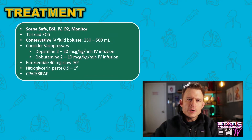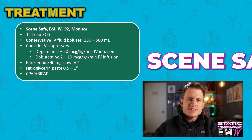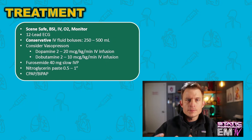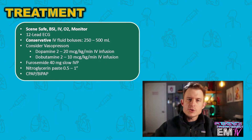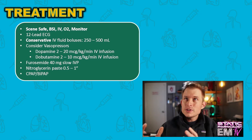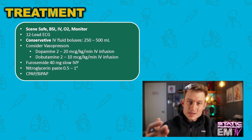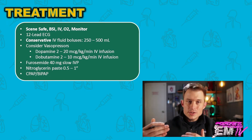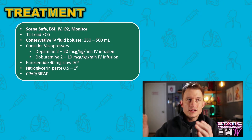I'll begin my treatment by following the mantra: scene safe, BSI, IV, O2, monitor. I'll definitely want to perform a 12-lead ECG on this patient. Now as my patient is in fluid overload, I would usually move straight to CPAP, nitroglycerin, or Lasix. However, they are too hypotensive to do that, so I must first actually increase their blood pressure in order to then diurese them effectively.